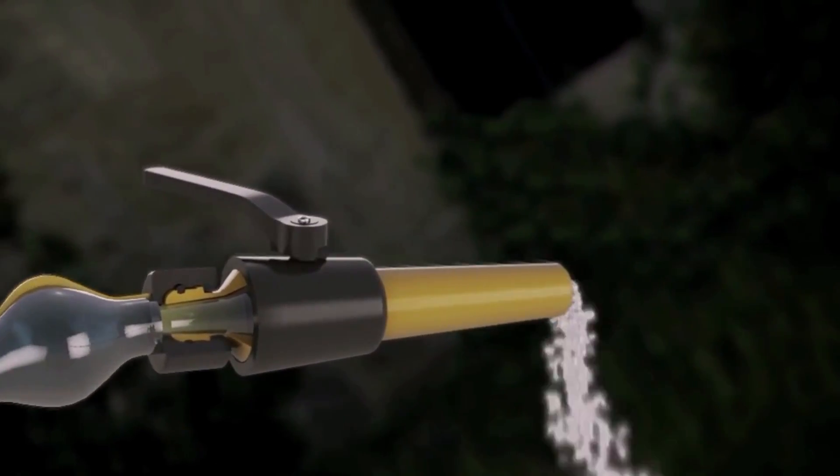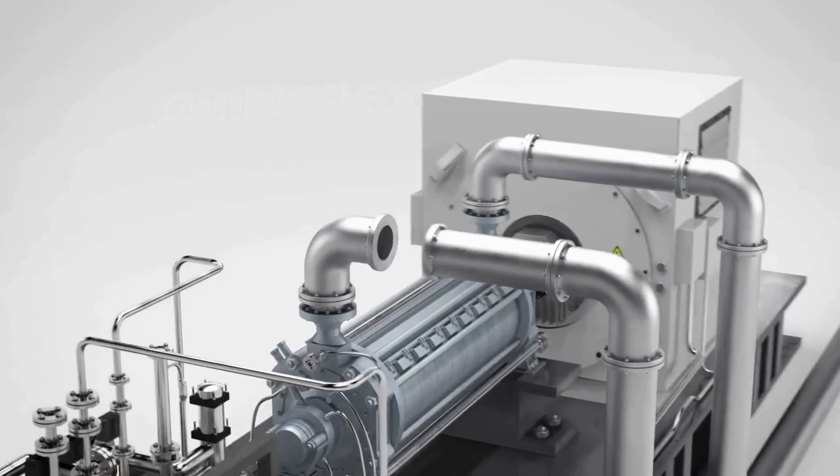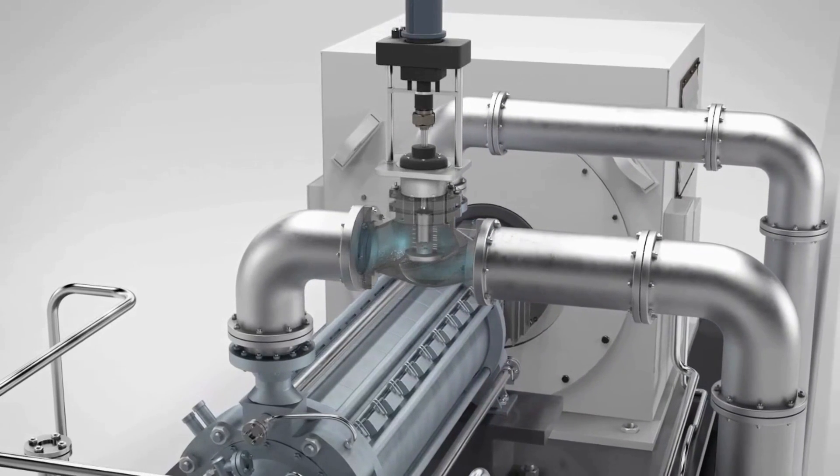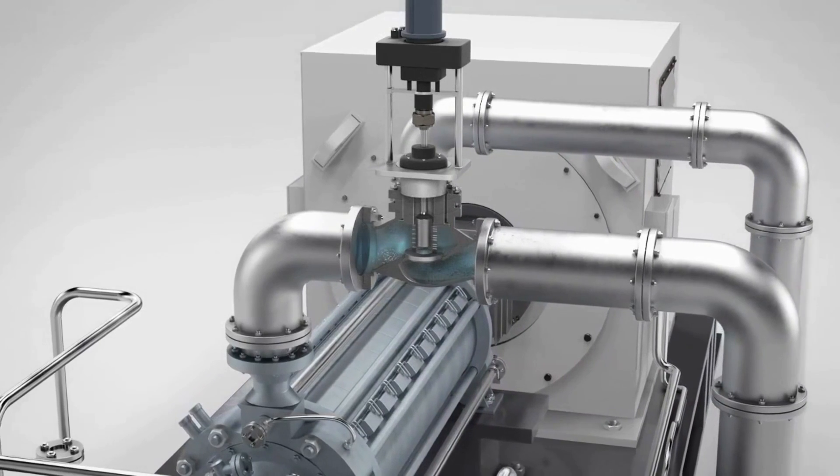While the pump speed remains constant, a throttle valve in the feed water circuit generates resistance in order to reduce the flow volume. The result is increased pressure in the water supply line.